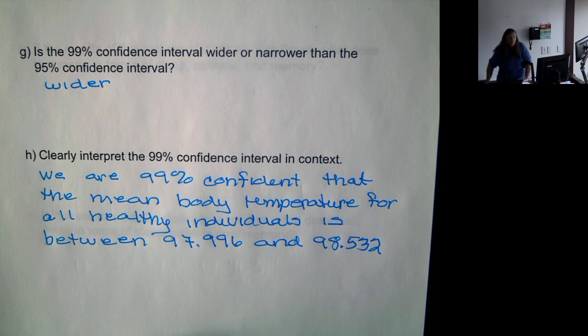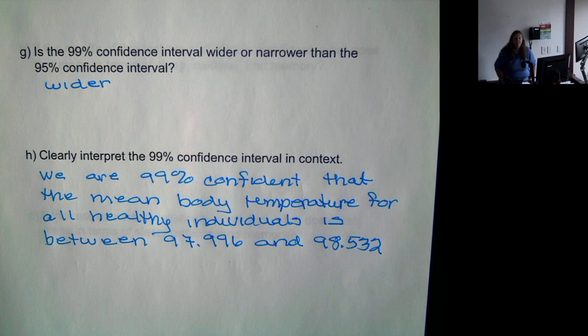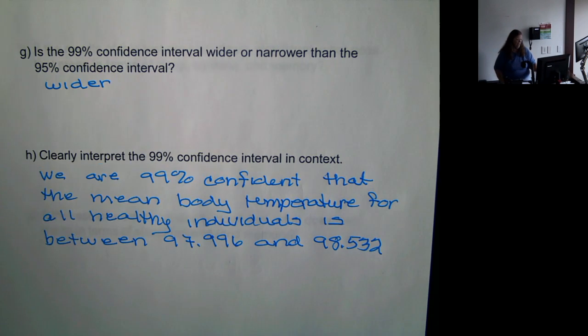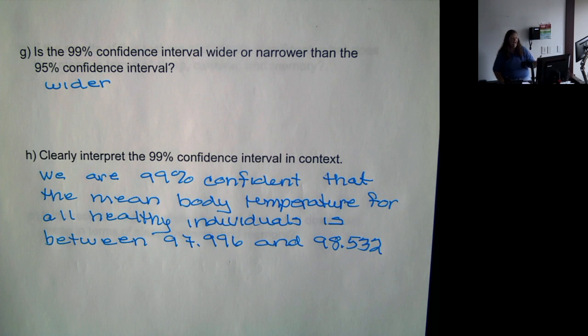Now, when you do this, you might get slightly different numbers for the interval. And there's nothing wrong with that. It's just due to how it's generating the bootstrap numbers.